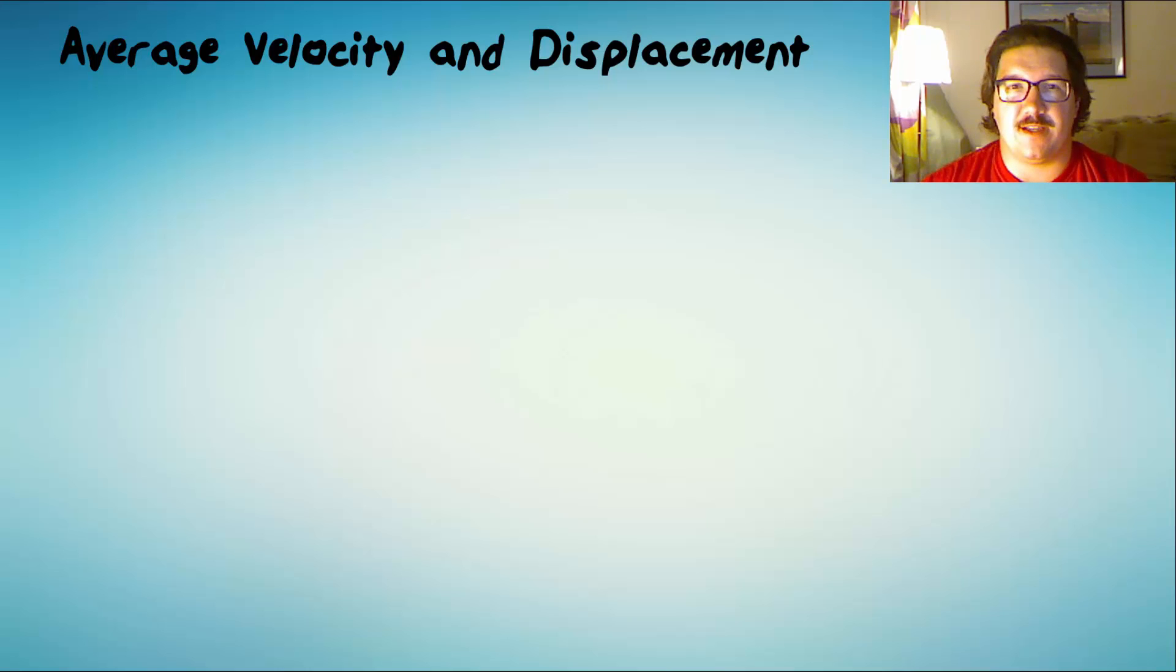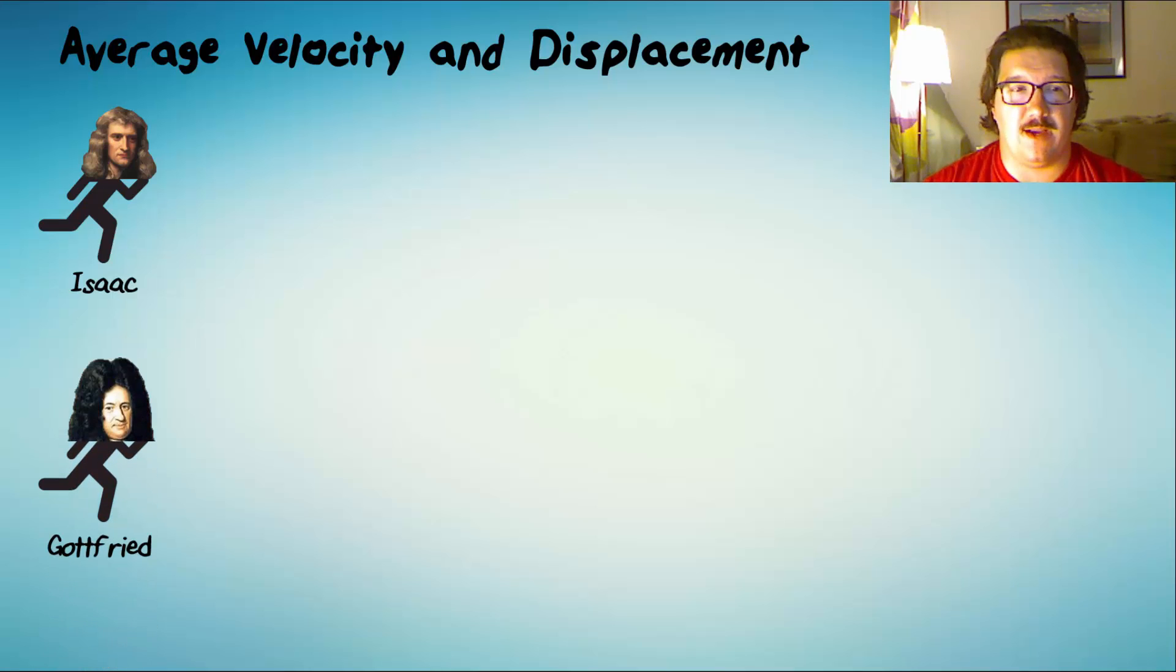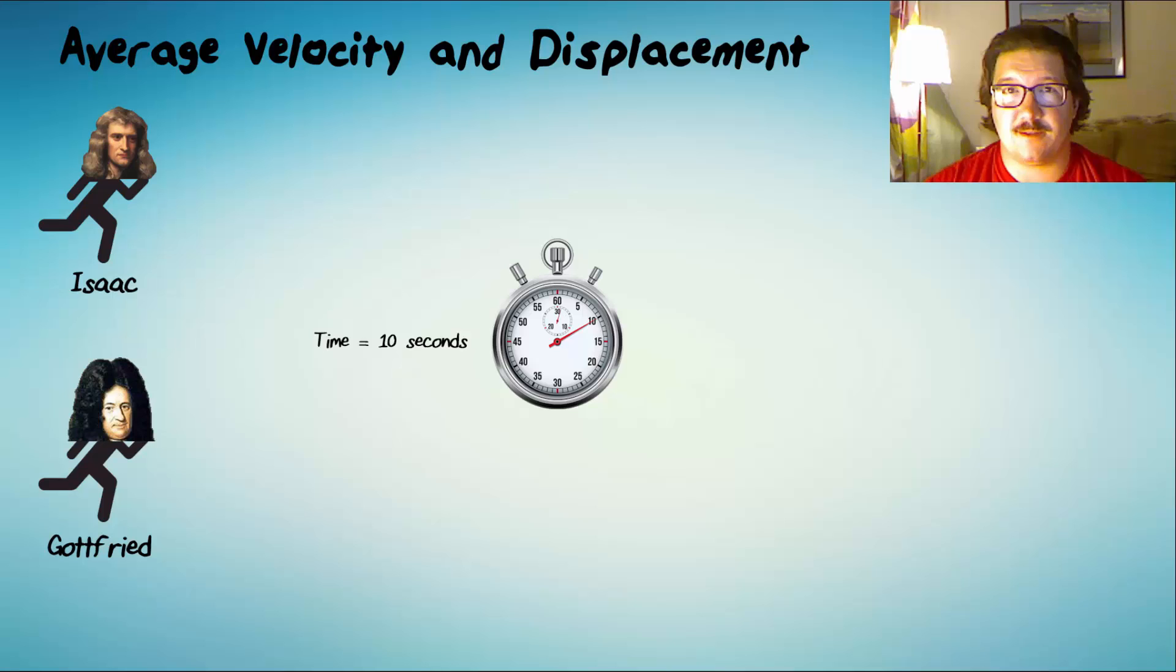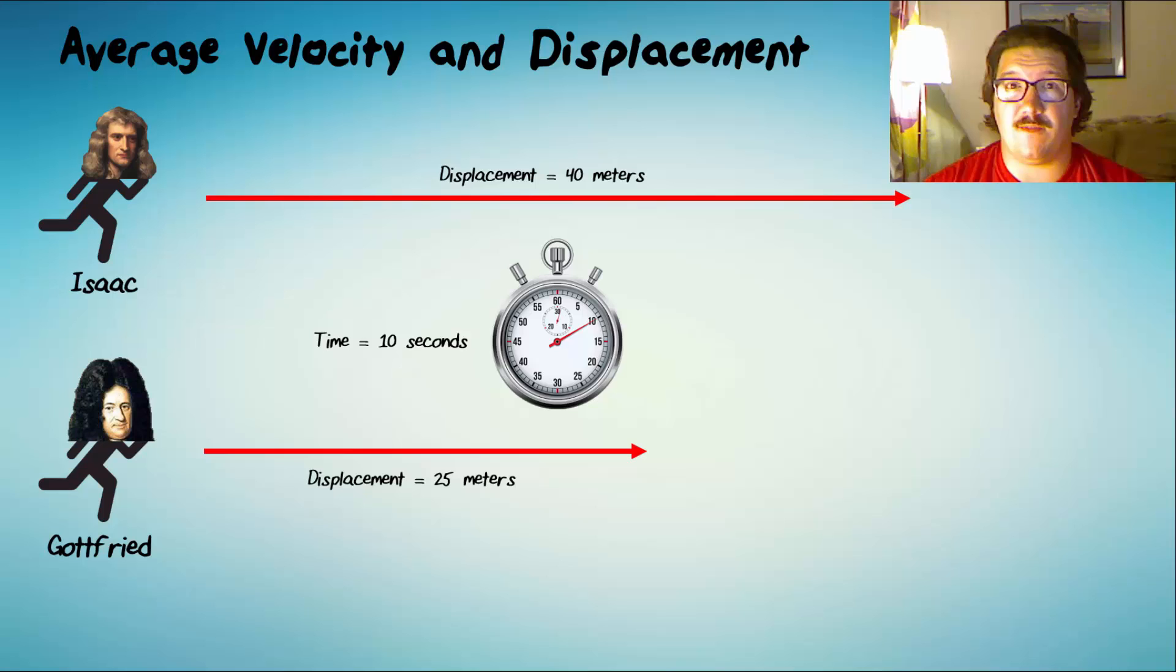Let's get into average velocity, and first let's see how displacement affects average velocity. Imagine we have a foot race between Isaac and Gottfried. They're both going to run for 10 seconds, and we'll see who runs farther. Isaac runs 40 meters, and Gottfried runs 25 meters. So, who had the greater average velocity? Well, if Isaac ran farther in 10 seconds than Gottfried, then on average, he must have been going faster. He wasn't necessarily going faster than Gottfried at every specific moment, but over the course of the entire 10 seconds, he was moving faster.